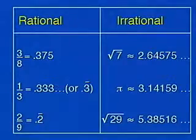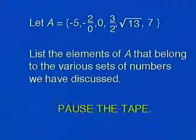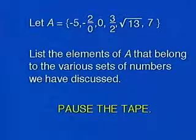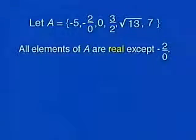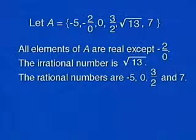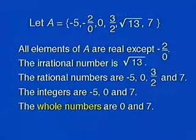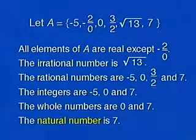Let's look at an example: suppose we have set A, and we want to list its elements belonging to each set of numbers. All elements of A are real except minus two divided by zero, which is undefined. The irrational number is the square root of 13. The rational numbers are minus five, zero, three-halves, and seven. The integers are minus five, zero, and seven. The whole numbers are zero and seven. The natural number is seven.